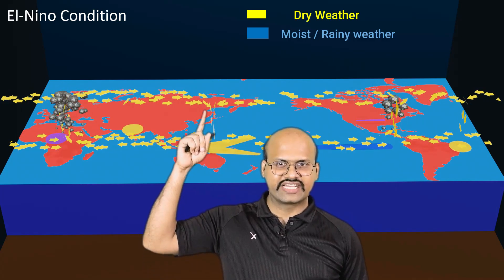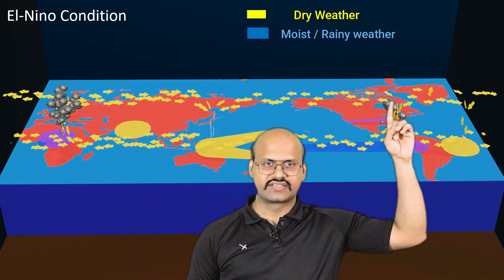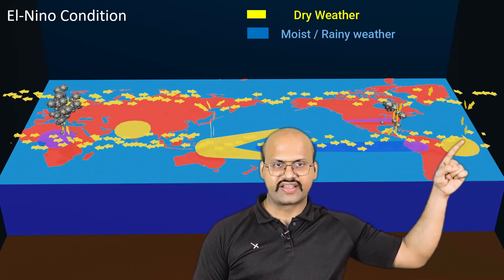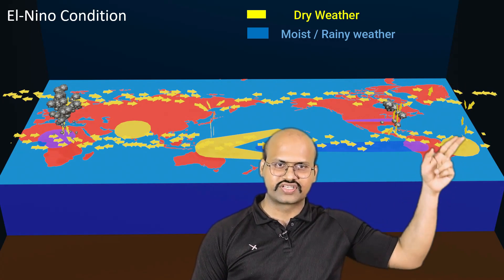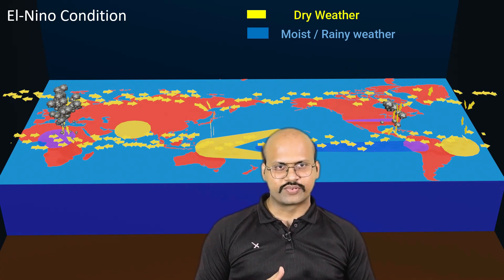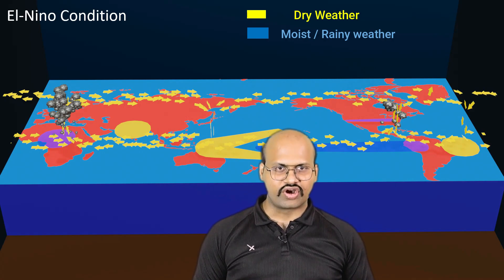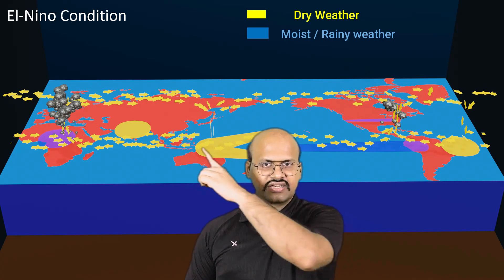Now let's see what happens during El Niño conditions. Some air currents change direction during El Niño. The air current now moves from Australia towards South America, rising over South America and giving a lot of rain there. This air then moves through the upper troposphere and descends over Australia — here it does not give any rain. One part of this air current moves towards eastern South America and descends there, also giving no rain, because descending air is adiabatically heated and will not produce rainfall.